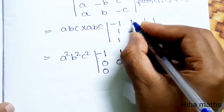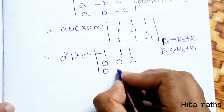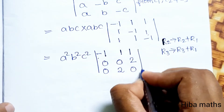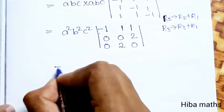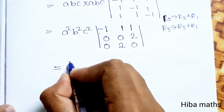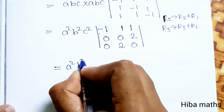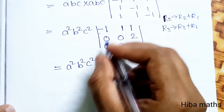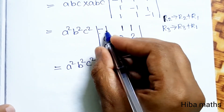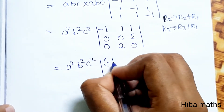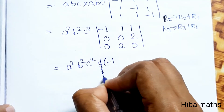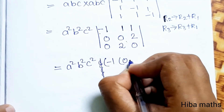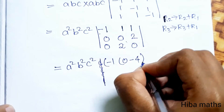So after applying the row operations, R1 remains minus 1, 1, 1. R2 becomes 0, 2, 0 and R3 becomes 0, 0, 2. Now I will expand this determinant. Minus 1 times the 2-by-2 minor gives minus 1 into minus 4.